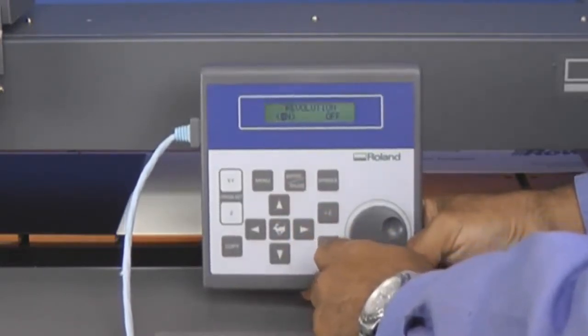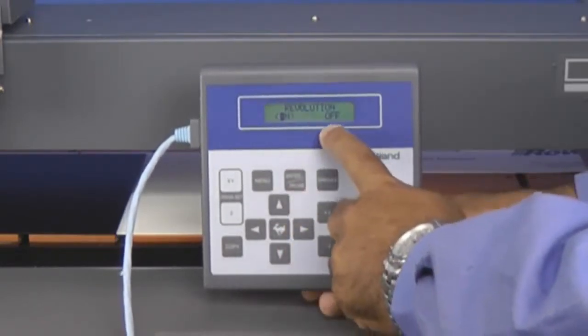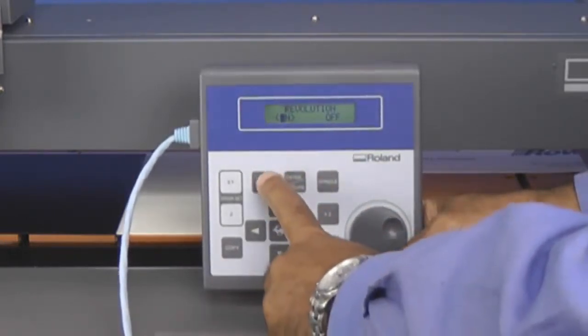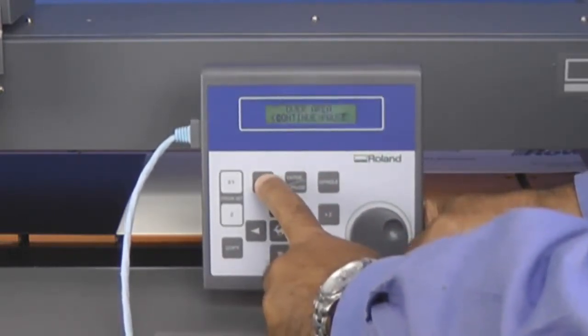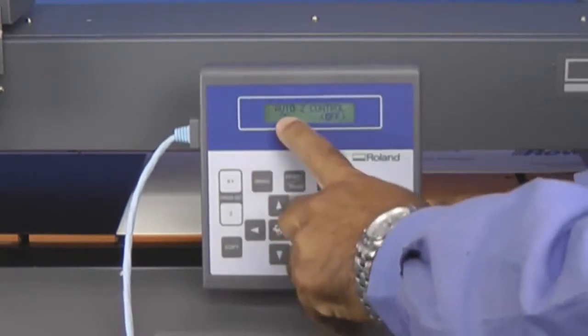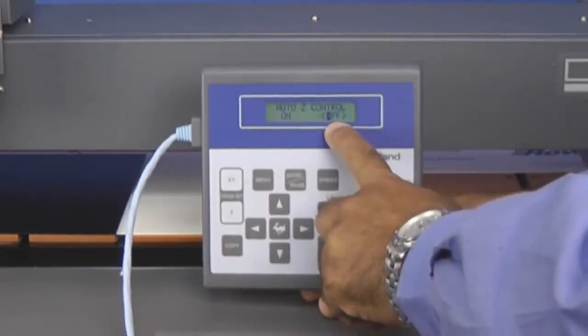Select Others and press Enter. We want to make sure that revolution is turned on. We'll press the menu key to Auto Z Control.